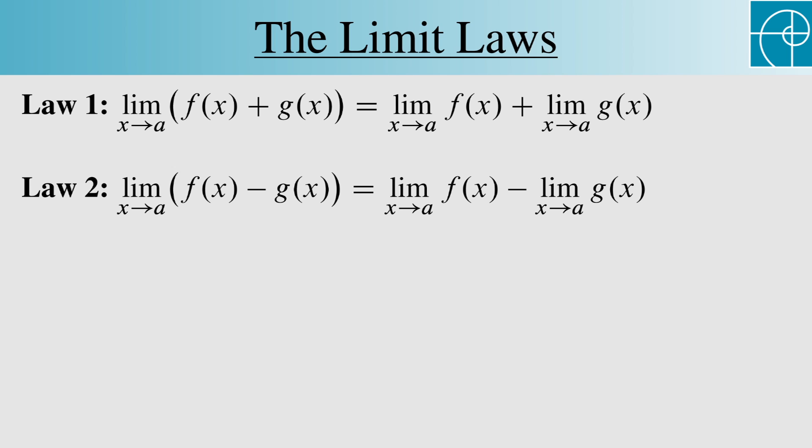For example, if we want to find the limit of x squared plus e to the x as x approaches 3, then we can look at the limit of each part separately. This becomes 9 plus e cubed. The 9 is the limit of x squared, and the e cubed is just the limit of e to the x.